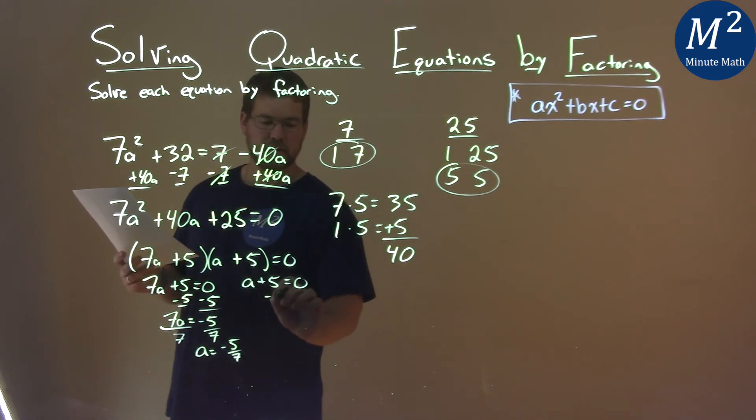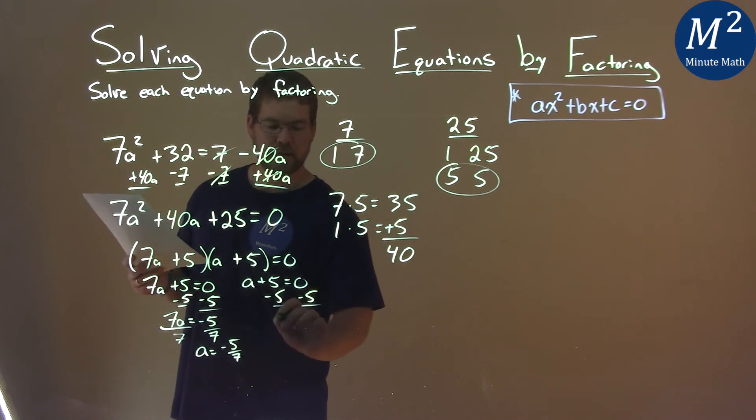Second equation: subtract 5 from both sides, and a equals negative 5.